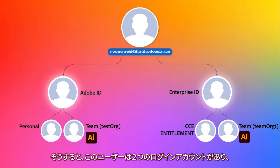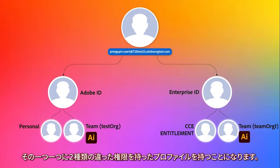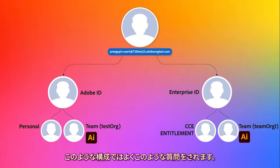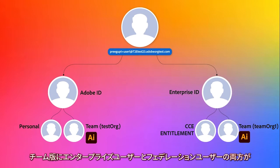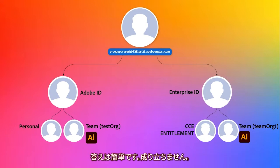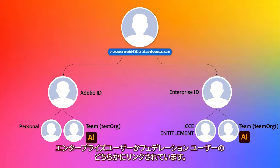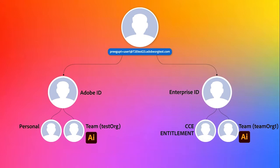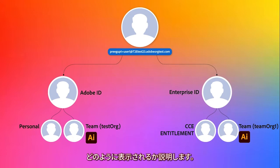So the user has two login accounts, and each login account has two different entitlement profiles. This configuration frequently prompts the question: how is it possible for a team to have both an Enterprise and Federated user in it? The answer is simple — it doesn't. It has an entitlement profile, and that is linked to the Enterprise or Federated user. We'll illustrate what this configuration and login experience looks like in the following slides.